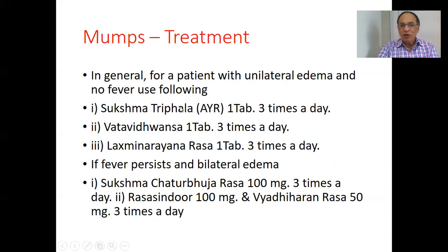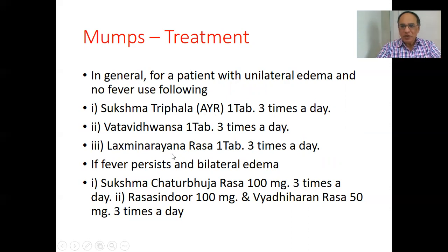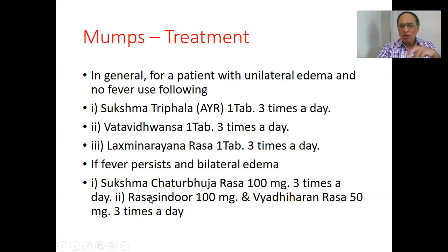Ayurvedic treatment for mumps: For the patient with unilateral edema and no fever, use Sukshma Triphala — one tablet three times a day — which is antiviral, to build up immunity against viral infection. If fever persists and there is bilateral edema, stronger treatment is needed: Sukshma Chaturmukha Rasa 100 mg three times a day, Rasa Sindura 100 mg, and Vyadhi Harana Rasa 50 mg — triturate them into a powder and give as churna packets three times a day.